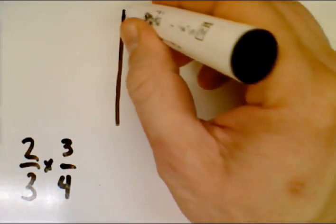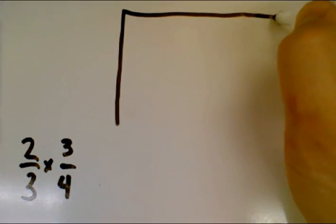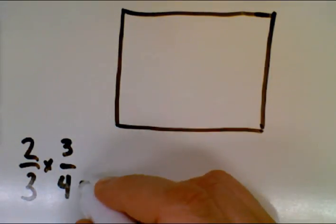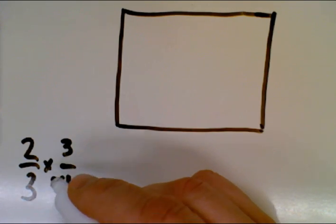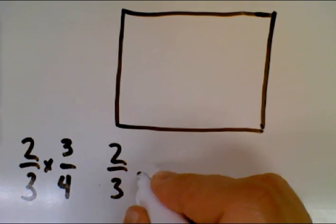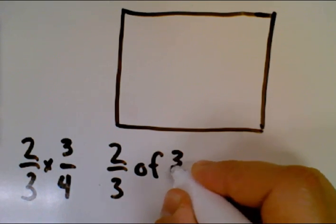For that, we're going to start with something to represent our whole, this rectangle to represent our whole. And a reminder that when we look at two-thirds times three-quarters, that is the same as two-thirds of three-quarters.